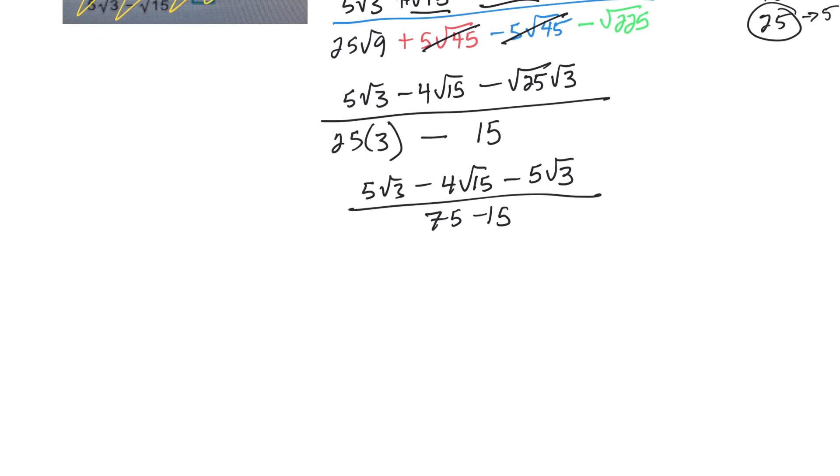Still going. So now, on the top, the 5 root 3s, a plus and a minus, they cancel. So on the top, I have minus 4 root 15. On the bottom, 75 take away 15, I think it's 60.